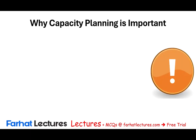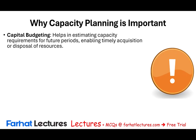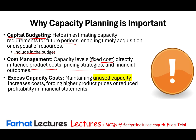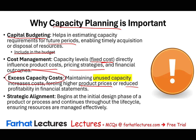Why is capacity planning important? First, it helps capital budgeting — estimating how much money you need for future periods for warehouses, machinery, property, plant and equipment. Second, cost management: capacity levels directly influence product cost, pricing strategies, and financial outcomes, helping you manage fixed costs relative to production. Third, excess capacity costs: maintaining unused capacity increases costs, forcing higher product costs or reducing profitability. Finally, strategic alignment: capacity planning begins in the initial design phase and continues throughout a product's life cycle.